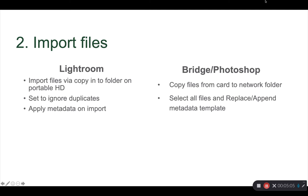Step two: import your files. Pop that card in the card reader or plug your camera into the computer. In Lightroom, you're going to import the files via copy into a folder in your catalog — set it to ignore duplicates and apply metadata on import. Give it a generic caption for everything so you know what's going on if you forget later. In Bridge and Photoshop, copy the files from your card to your computer, then select all the files and either replace or append the metadata template. At this point, your files are on the computer with basic metadata applied automatically.